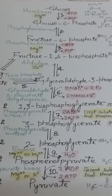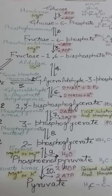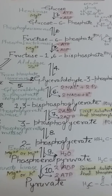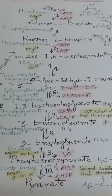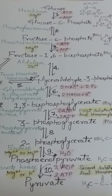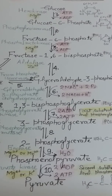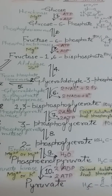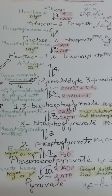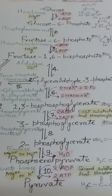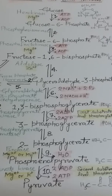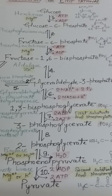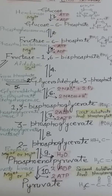The energy gain comes in the payoff phase of glycolysis. The payoff phase yields ATP and NADH. The net energy yield from one molecule of glucose in glycolysis is 2 ATP and 2 NADH.